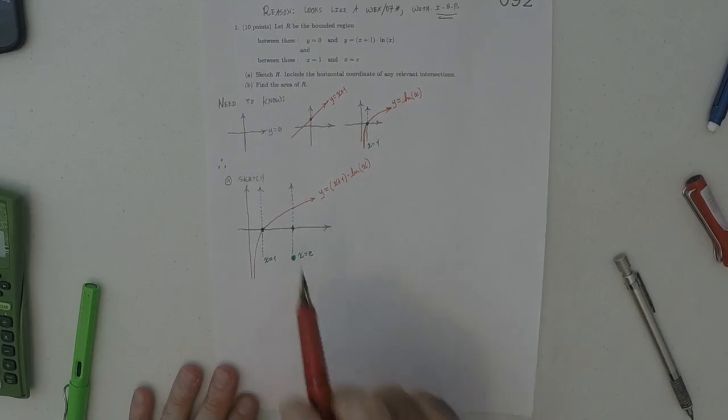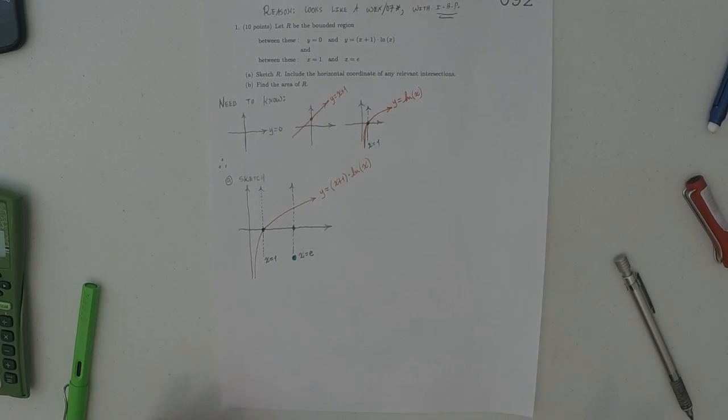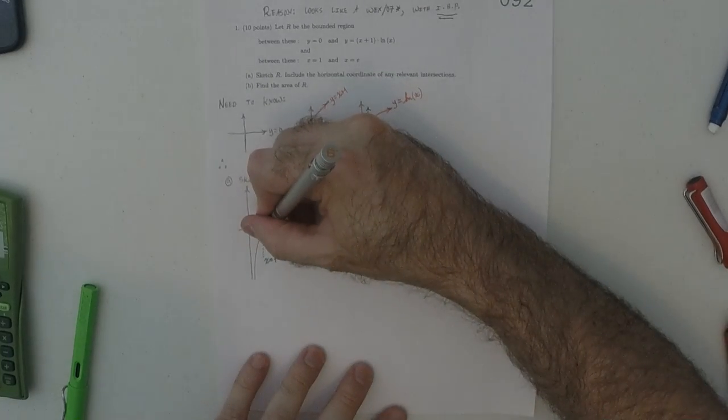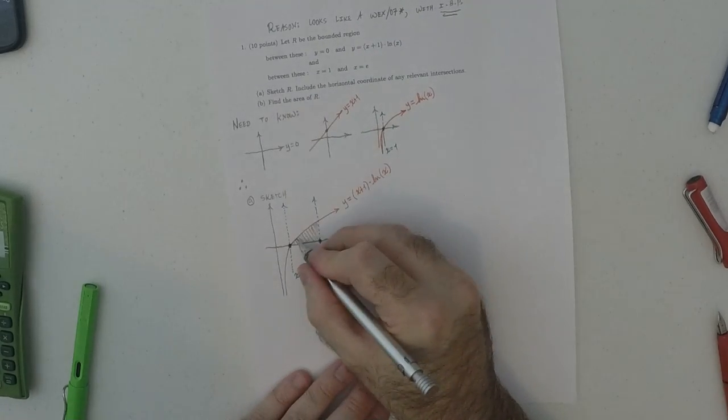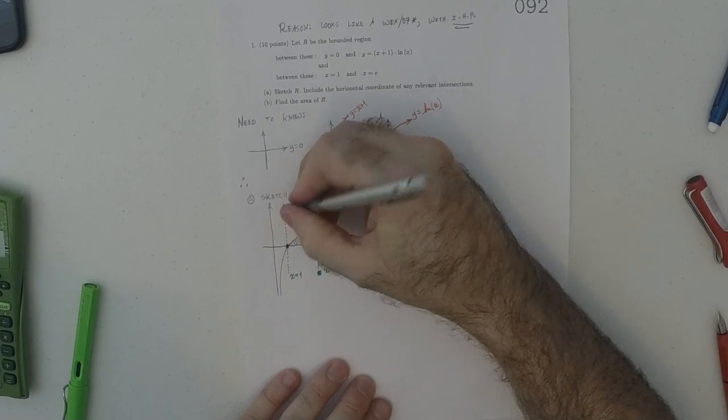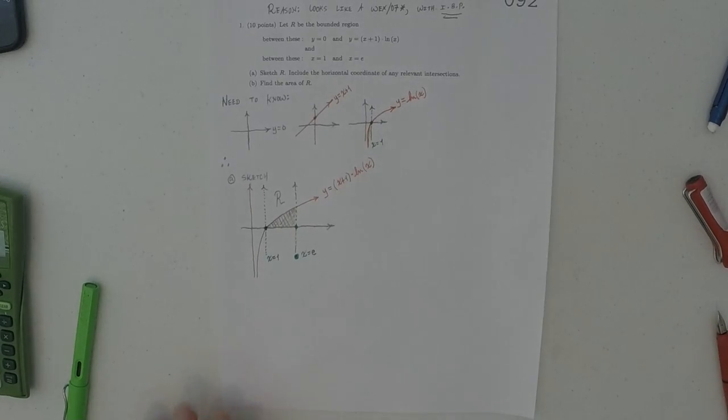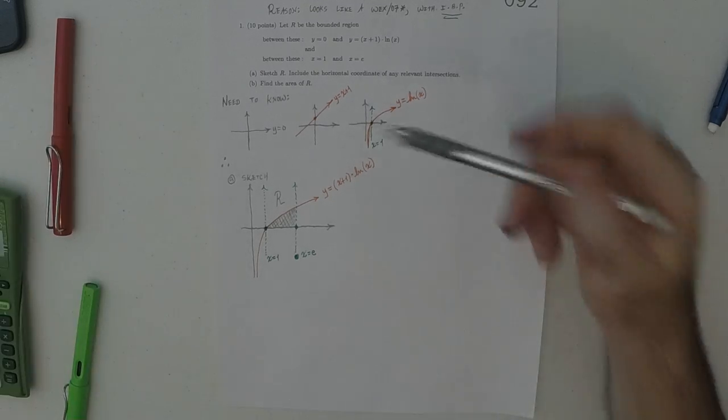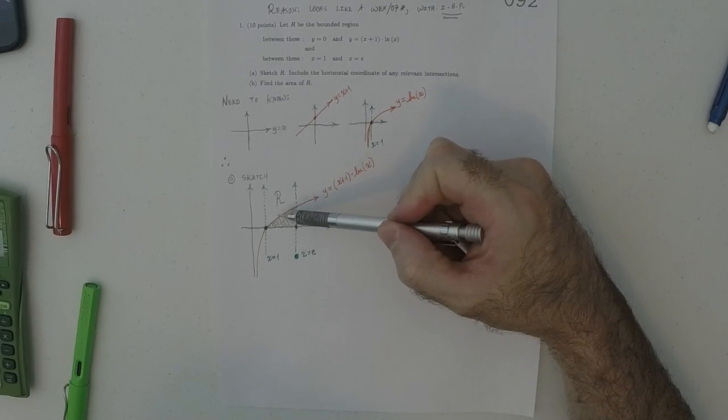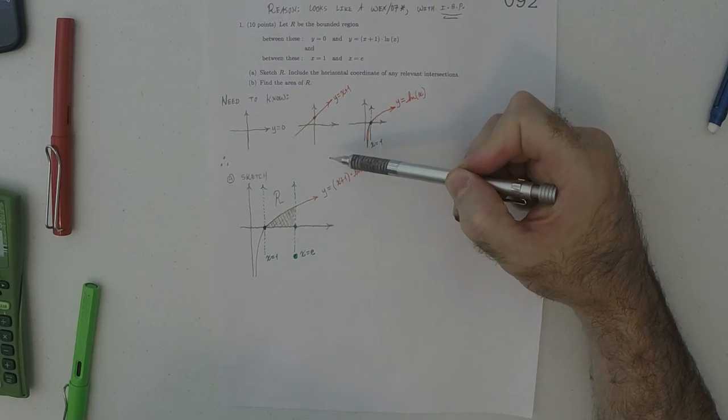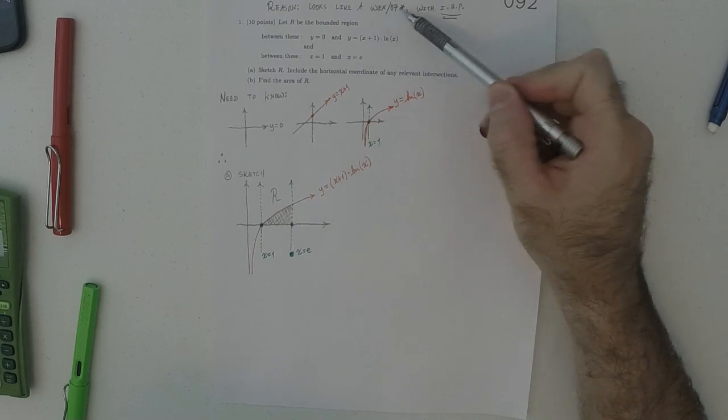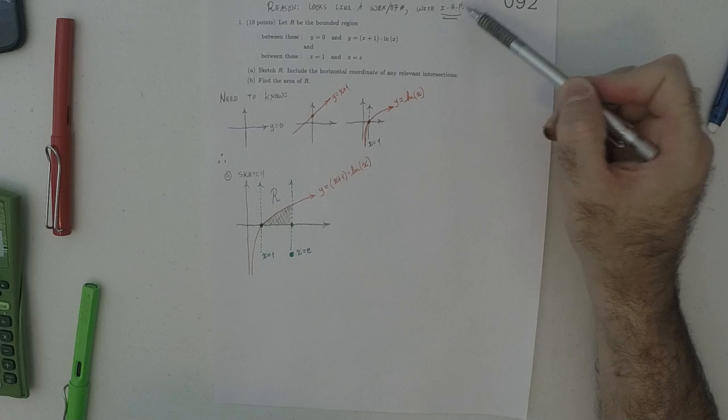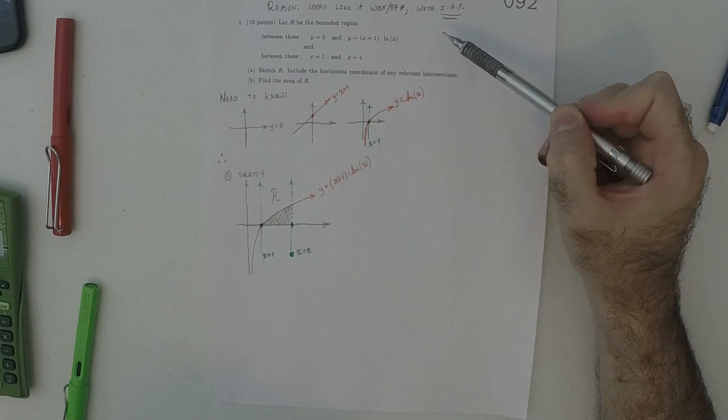So between 1 and E. Alright. So then the region here is pretty straightforward. It's just this. So that's the region R there. But the reason why the region is straightforward is because finding the region was not the real focus of this exercise. Rather, the focus was that you were doing this lecture 7 topic, but with a new piece, with integration by parts.